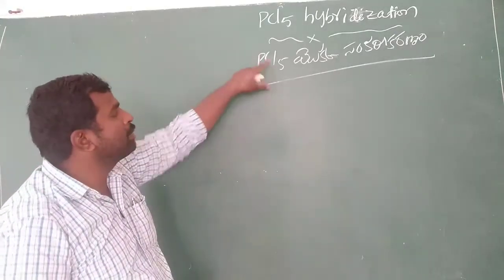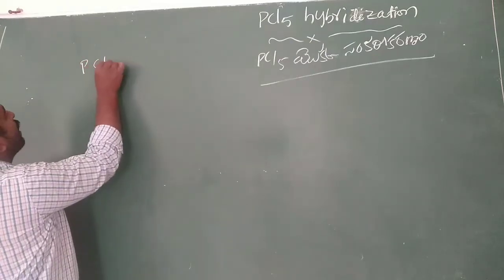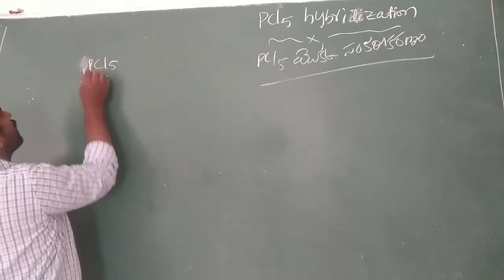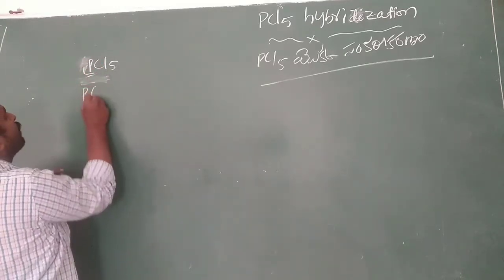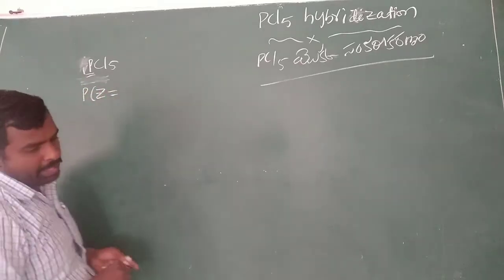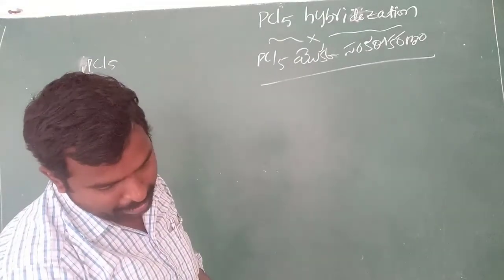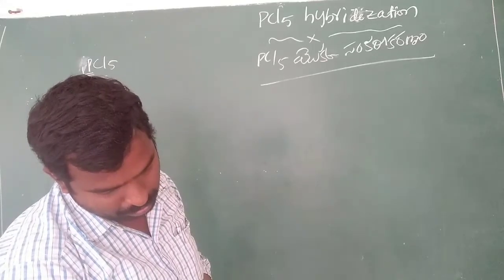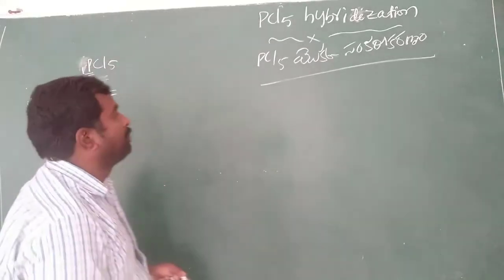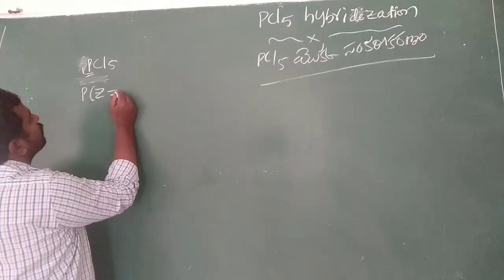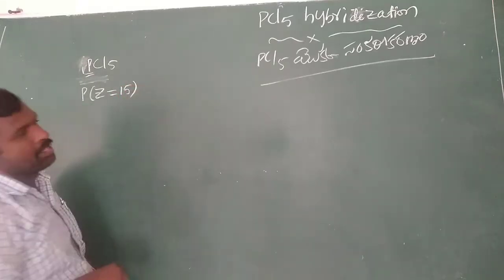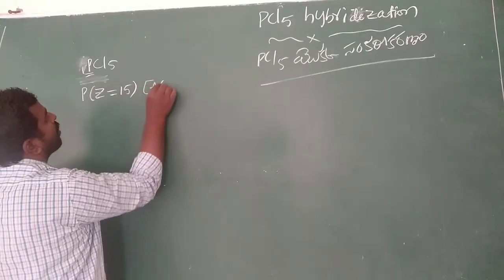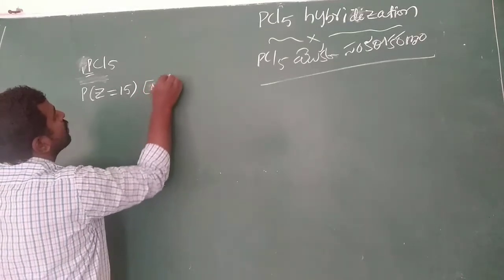In PCL5, phosphorus is the central atom. The question is: what is the phosphorus atomic number? Phosphorus atomic number is 15. So with atomic number 15, phosphorus follows after neon in its electronic configuration.